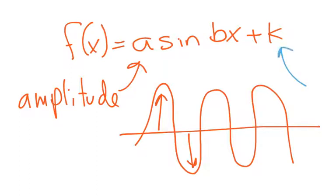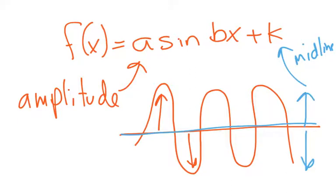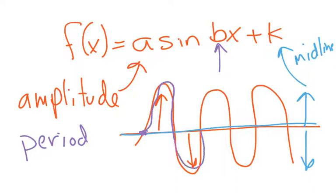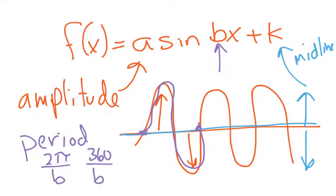Another one is K — that's our midline shift. If it's positive, we're shifting the whole graph up; if it's negative, we're shifting it down. Then B is kind of the tricky one, because B is not the period. The period means from one point, how far it goes until we hit that same point again. 2π, or 360 depending on whether you're dealing with radians or degrees, divided by B gives us the period.